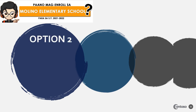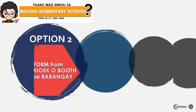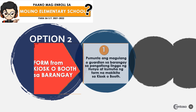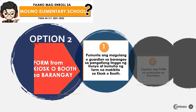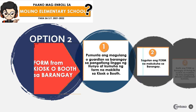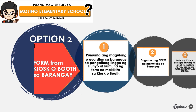Para naman sa Option 2: Form from booth or kiosk sa barangay o paaralan. Step 1: Pumunta ang magulang o guardian sa paaralan o barangay sa pangatlong linggo mula nang nagsimula ang official enrollment 2021-2022 at kumuha ng form na makikita sa kiosk o booth. Step 2: Sagutan ang form na nakuha sa barangay o paaralan. Step 3: Ibalik ang form sa barangay o paaralan at ihulog ito sa box na may pangalan na Molino Elementary School.